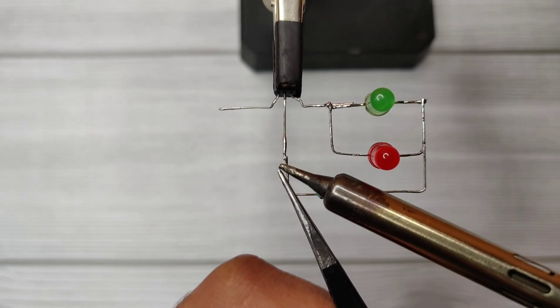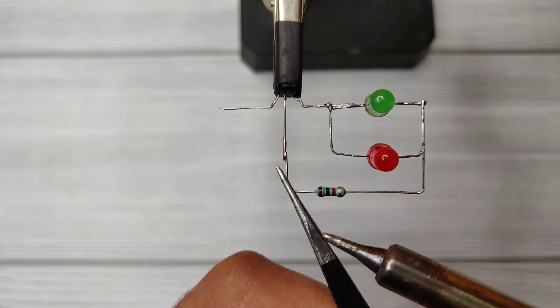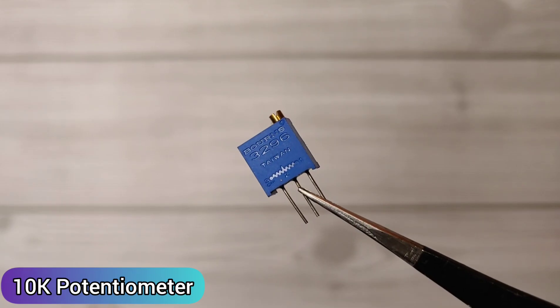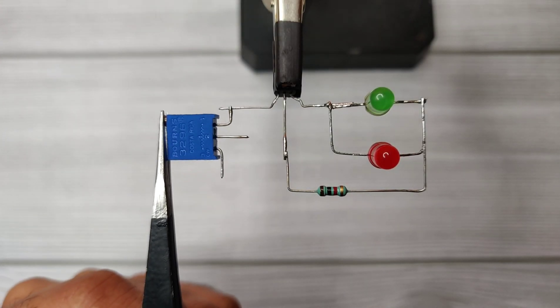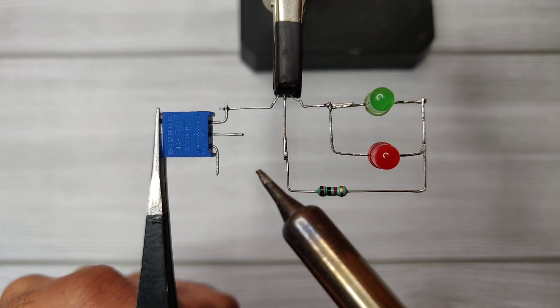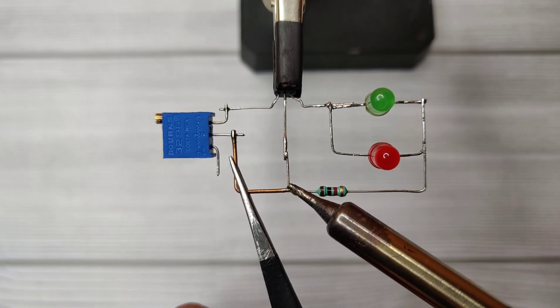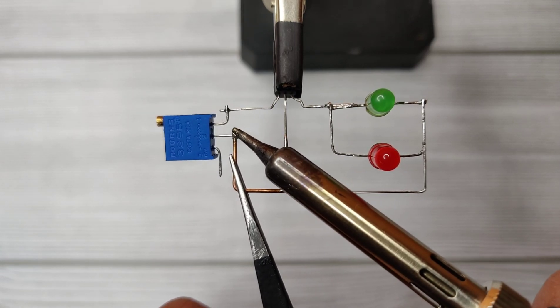Take a 1 kilo-ohm resistor and solder between the LEDs and pin 2 of the shunt regulator. Use a 10k multi-turn potentiometer. Solder potentiometer pin 3 with pin 1 of the shunt regulator. Using a jumper, connect pin 2 of the shunt regulator with pin 2 of the potentiometer.